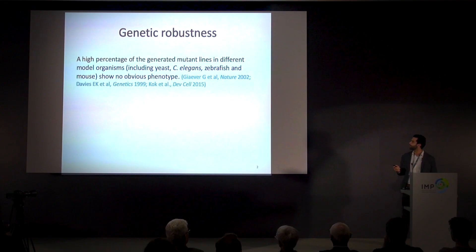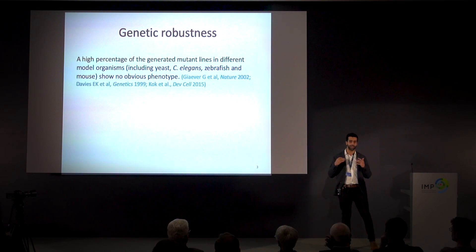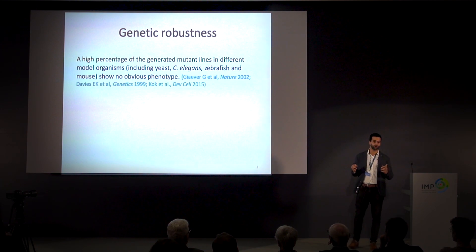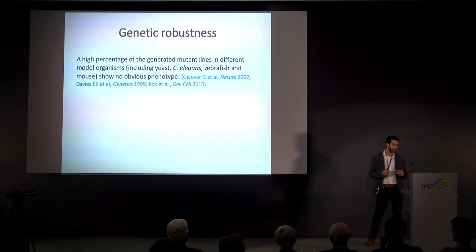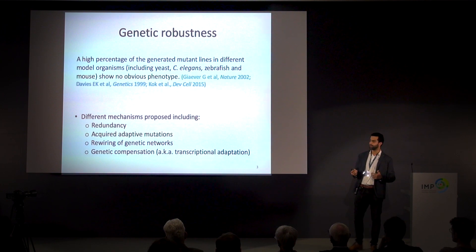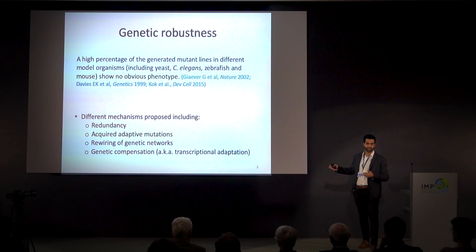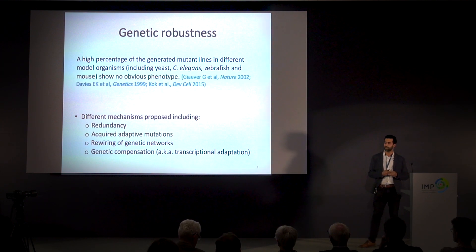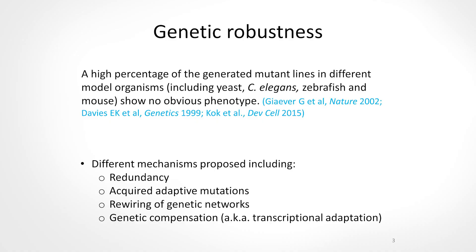Today I'm going to tell you why this happens often, and how one can circumvent this by effectively designing mutant alleles that can show hidden phenotypes. Our interest in this phenomenon came from the fact that a high percentage of generated mutant animals in different model organisms fail to show any obvious phenotype. A number of mechanisms have been proposed, including redundancy, acquiring of adaptive mutations in rapidly proliferating organisms like yeast, rewiring of genetic networks or feedback loops, and finally what I'll be talking about today: genetic compensation, or what we also call transcriptional adaptation.